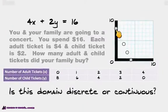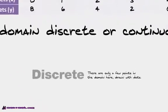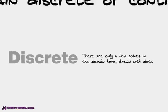If you think about it, you can't have maybe half a ticket. If you think about this, you can't have half a ticket or two and a half tickets. You have to buy a whole number amount of tickets. This domain is discrete.